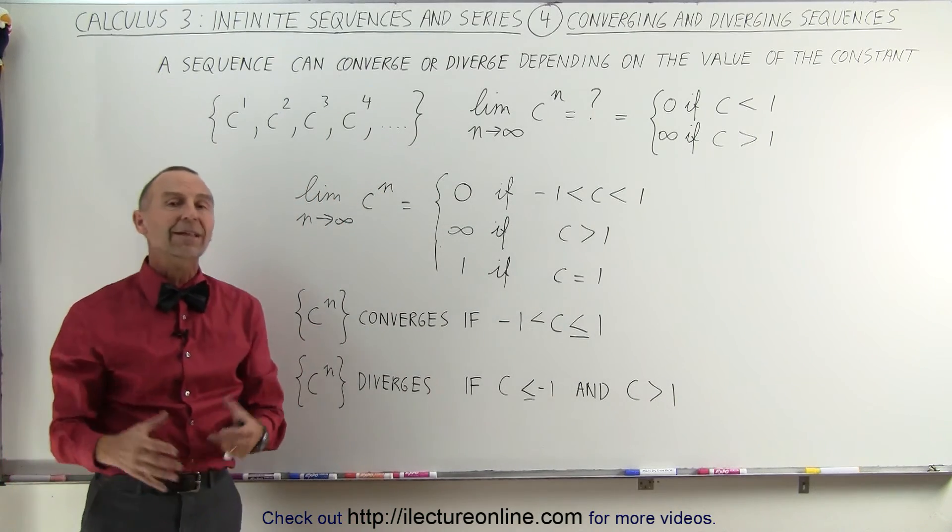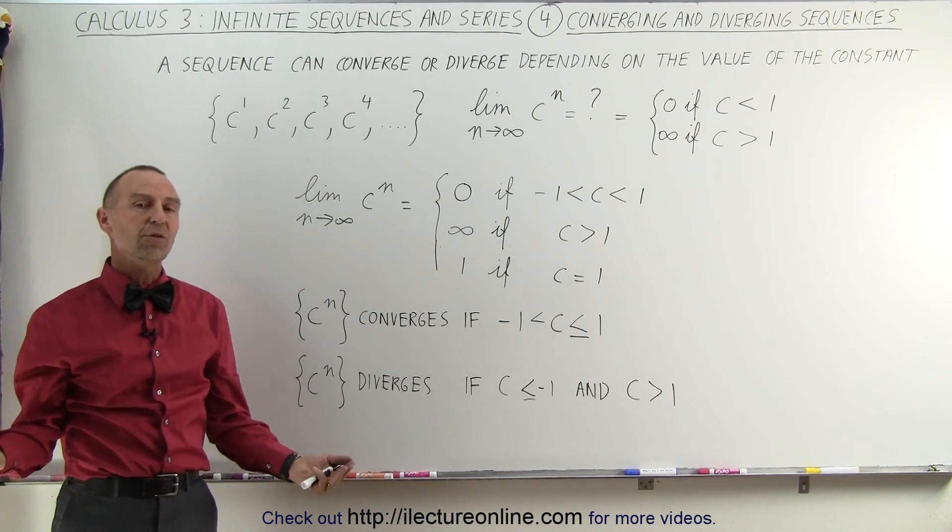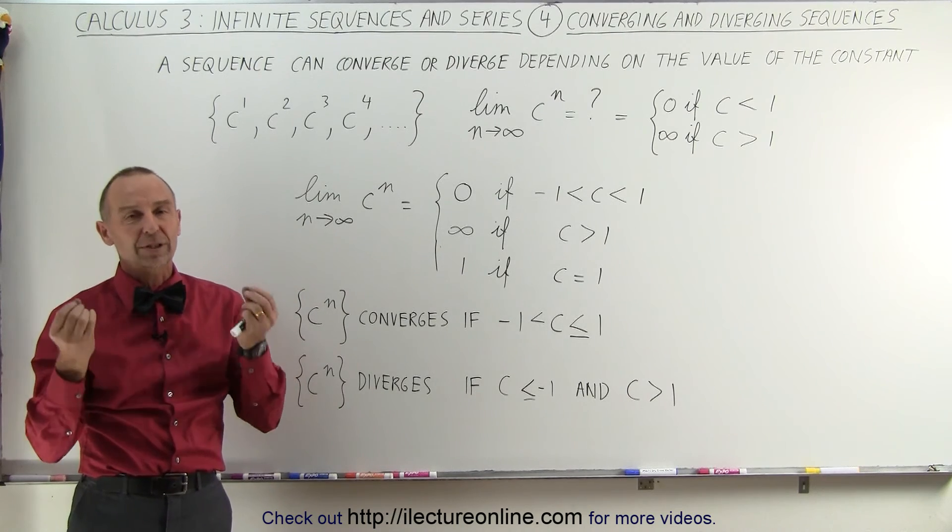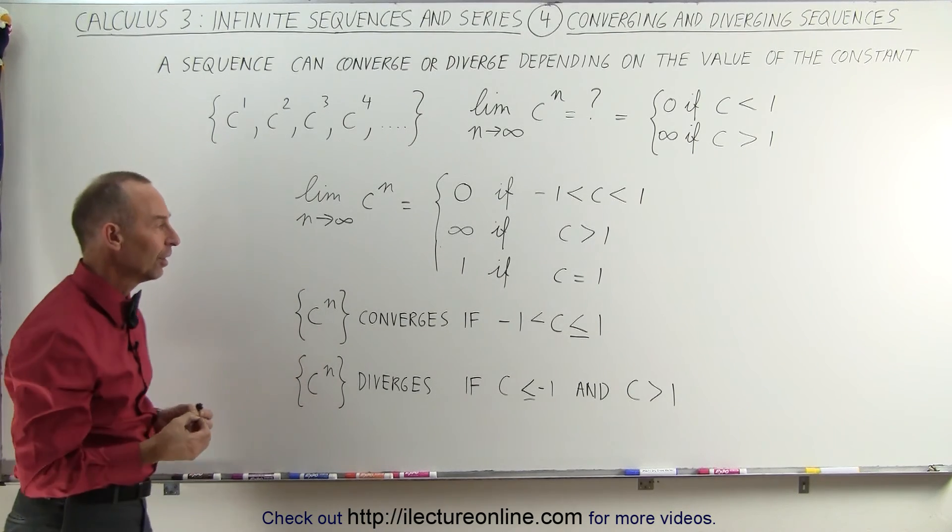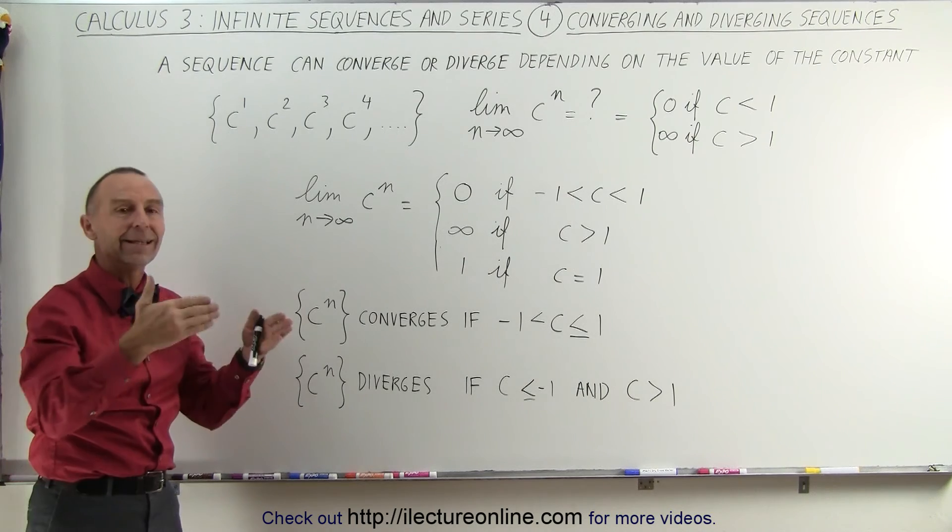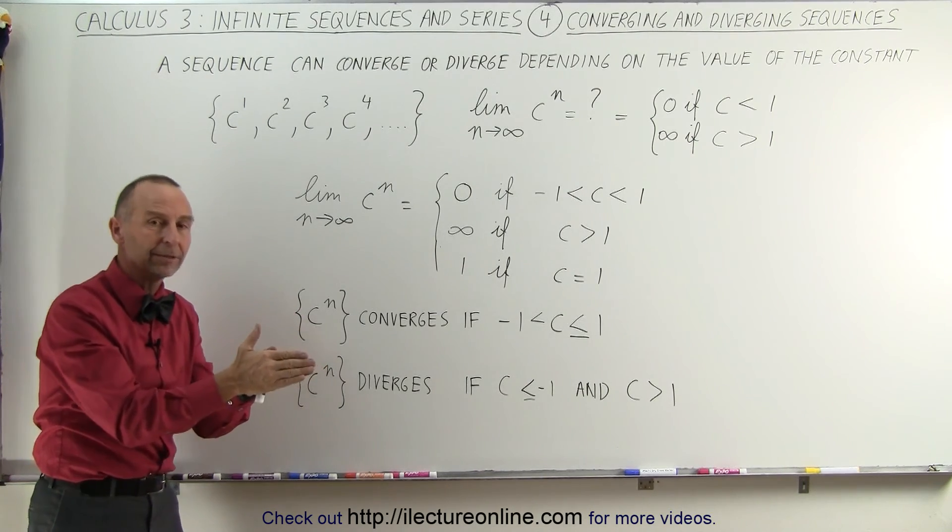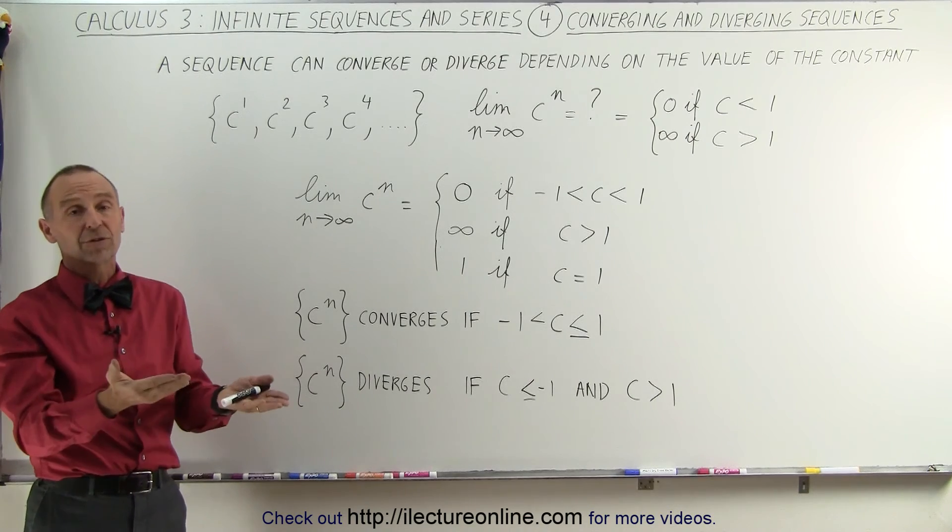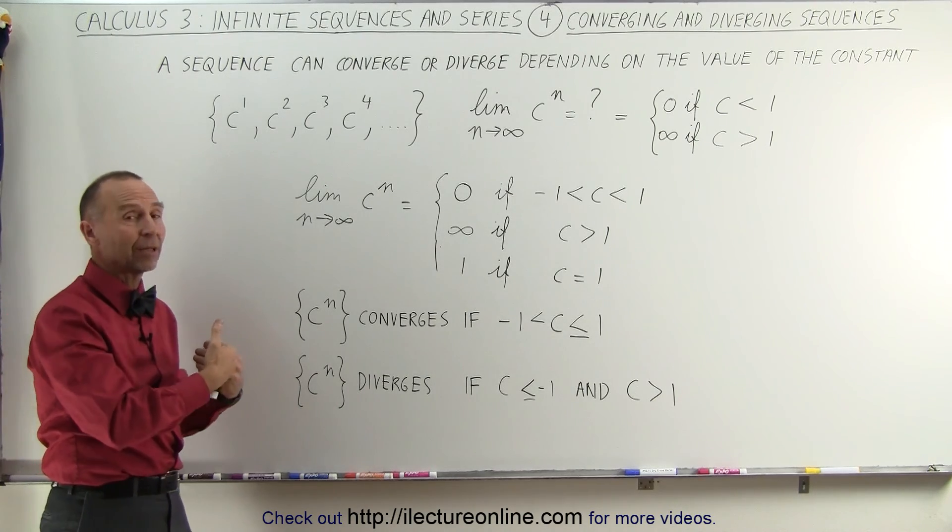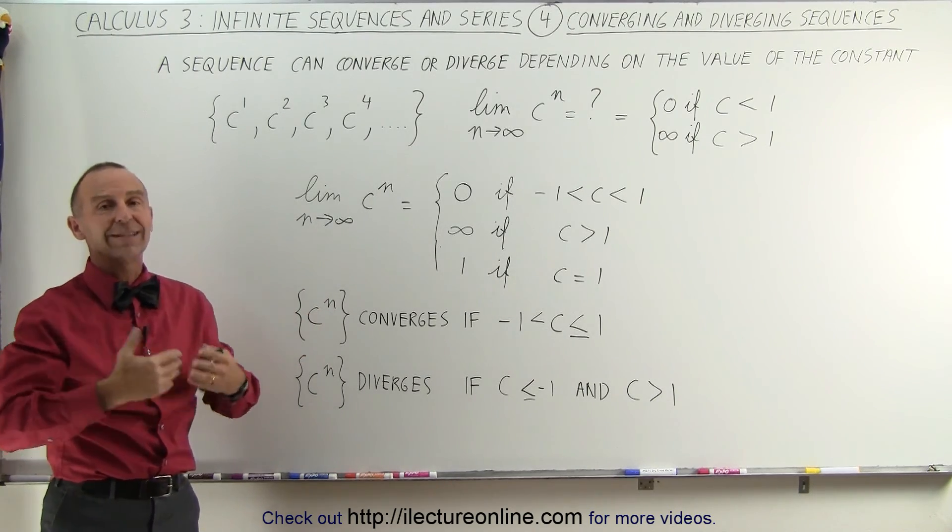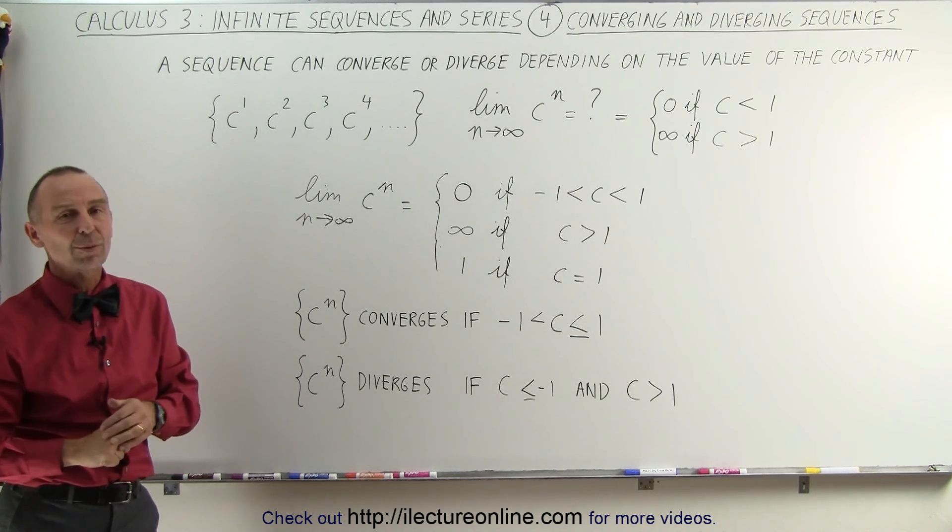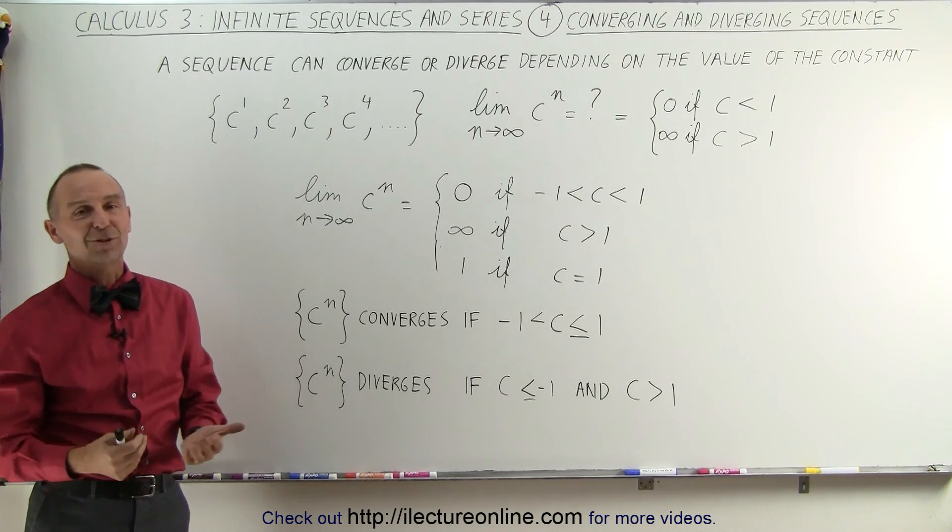We can come up with lots of examples like that where some sequences will converge or some sequences will diverge, but the concept here is what's important. If you understand that in the limit as n goes to infinity, if it goes to a specific number other than infinity it converges, if the number becomes infinitely large it diverges, and that's the difference between converging and diverging sequences.